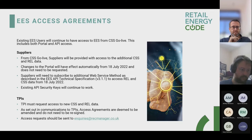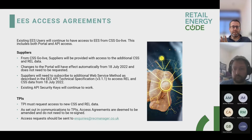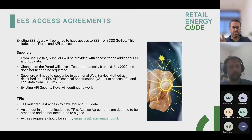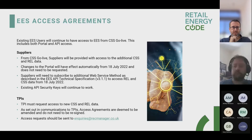RECO is not requesting TPIs to re-sign the access agreements already signed — they are deemed to be amended and don't need to be re-signed to get hold of the new data. However, TPIs do need to contact the code manager to request access to the new data. Those requests go to the code manager at the email address shown. If you are a TPI and don't want the additional data, you don't have to send a request and your access will continue as it is after CSS go live.